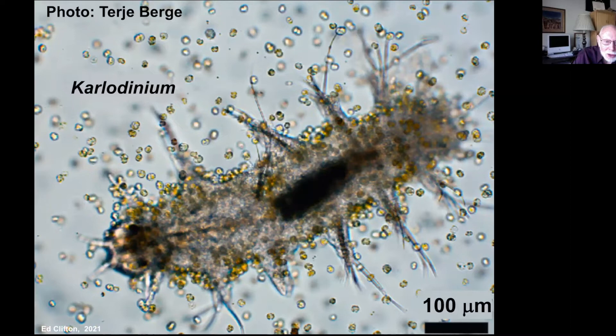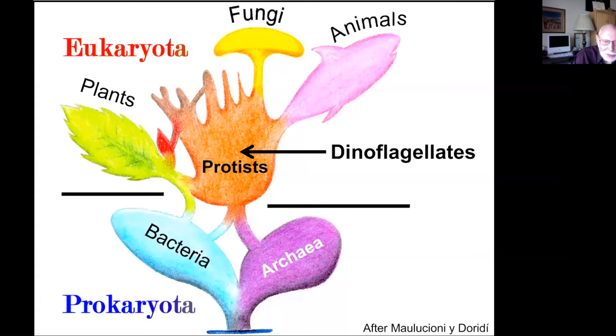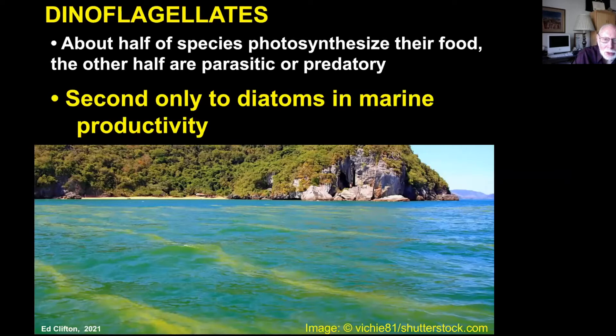Dinoflagellates fall into the group called protists — not really plants and not really animals. Although only half the species photosynthesize and the other half are parasitic or predatory, they're second only to diatoms in marine productivity. And sometimes that productivity gets out of hand in the form of red tides.